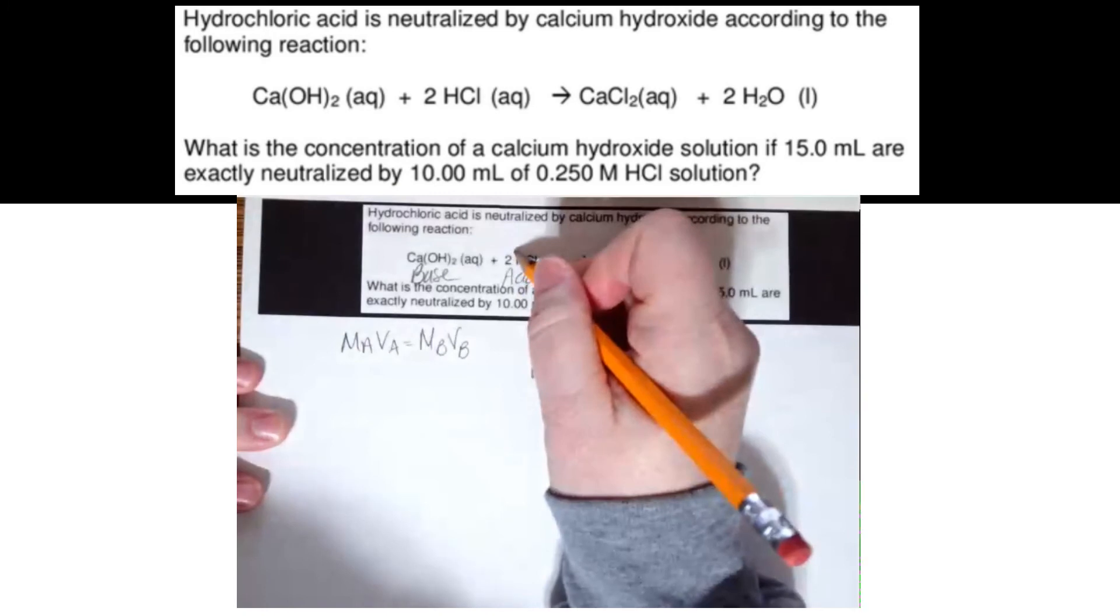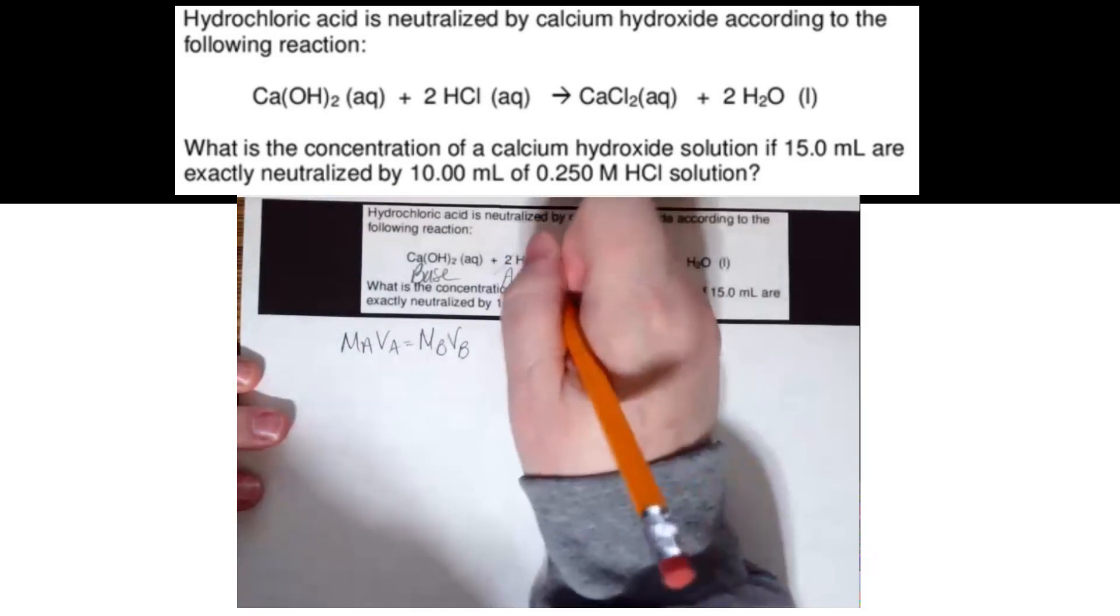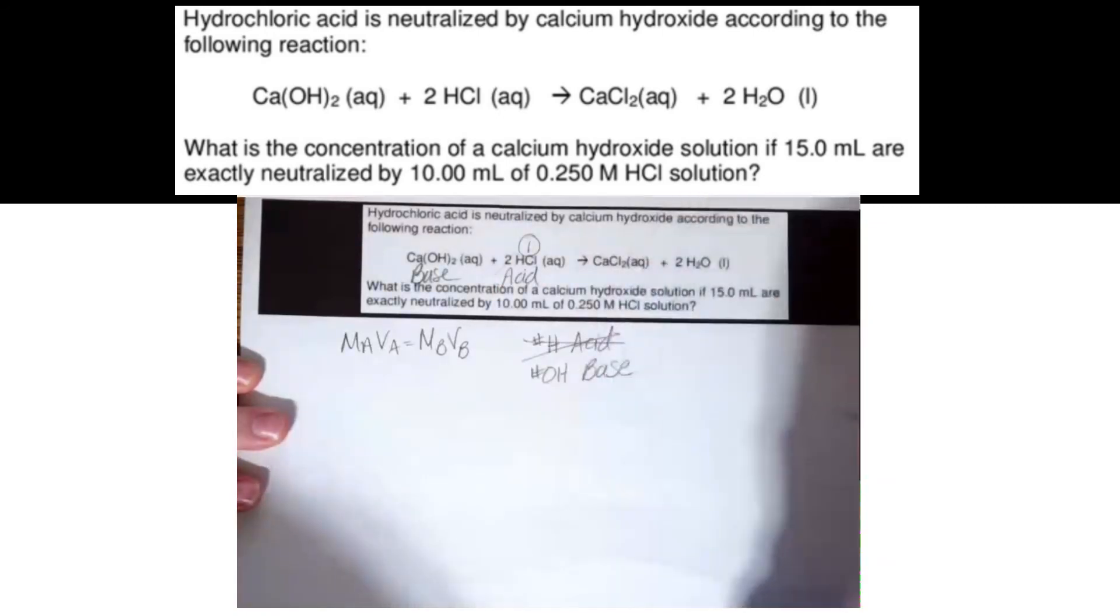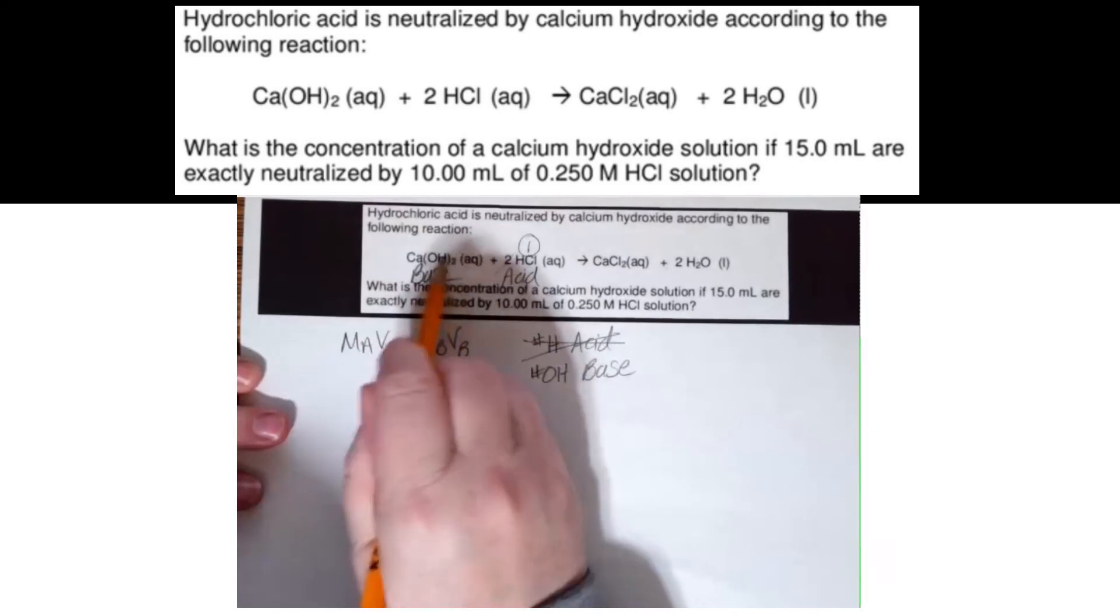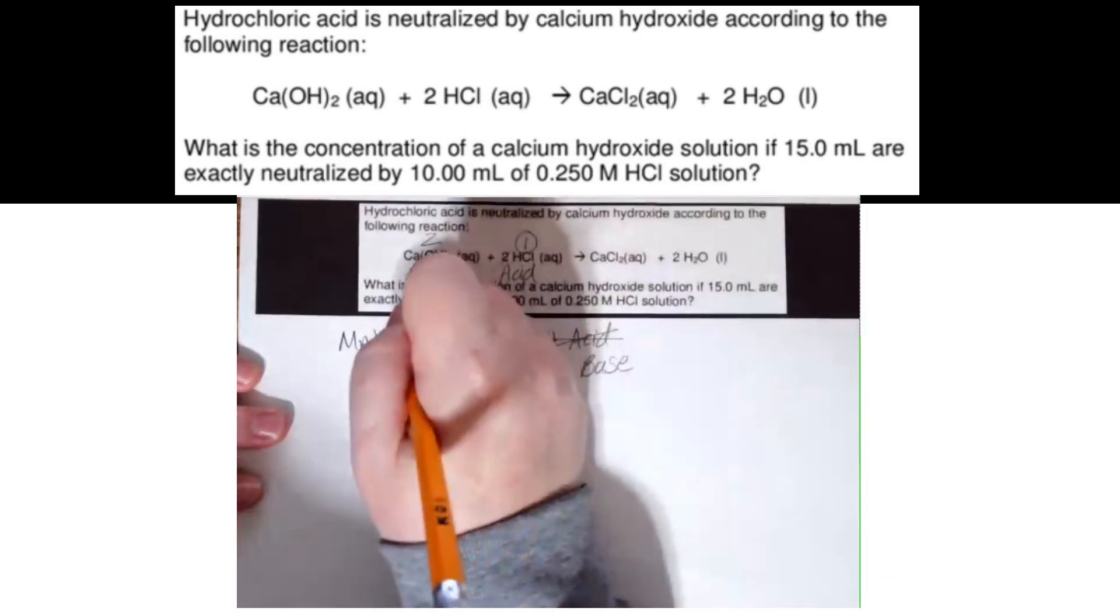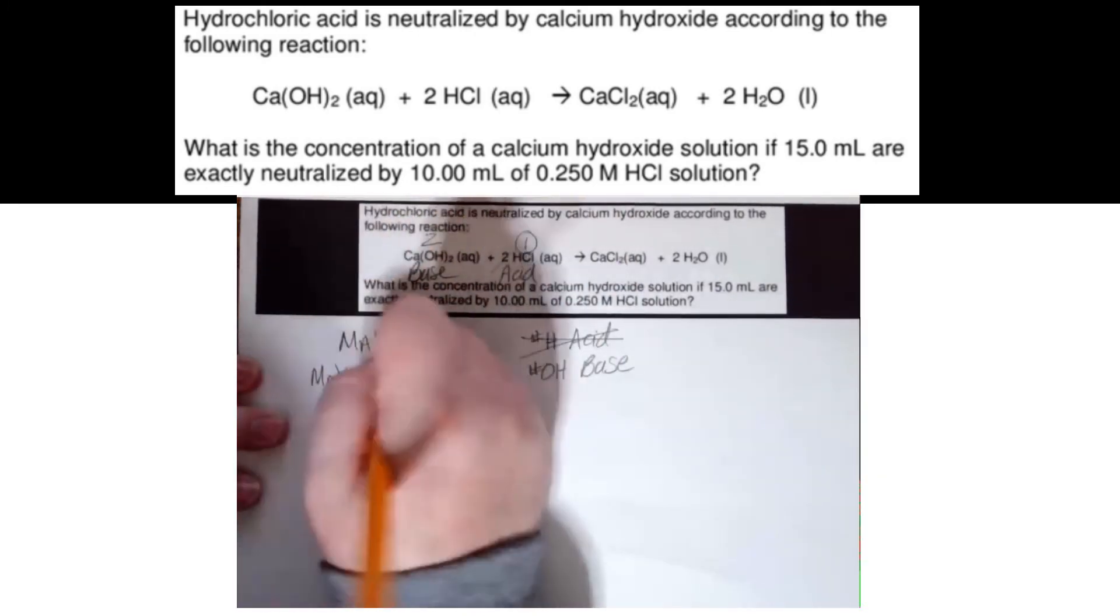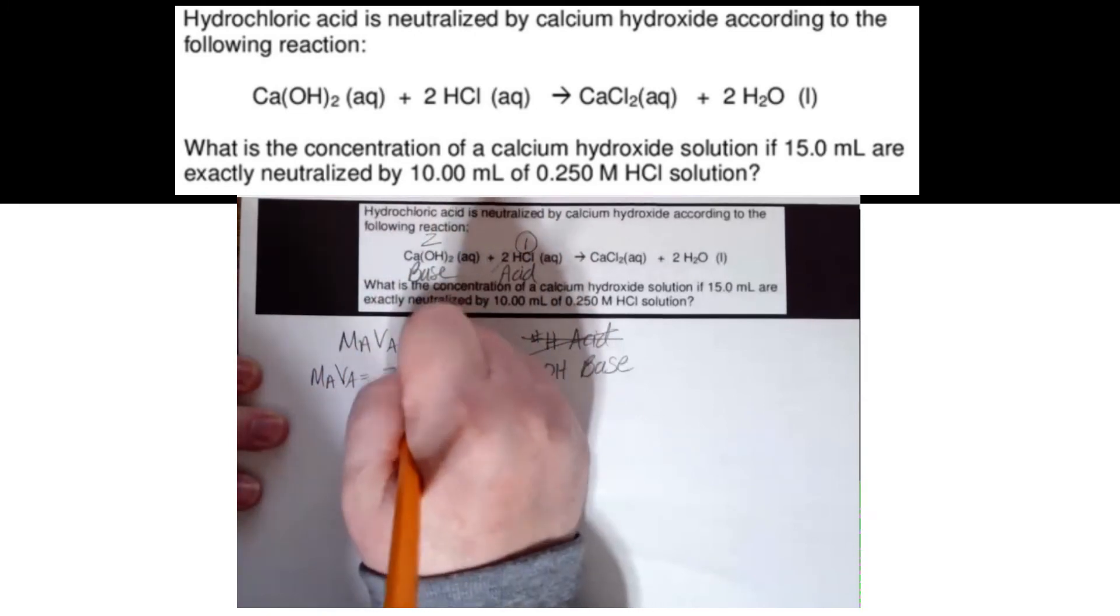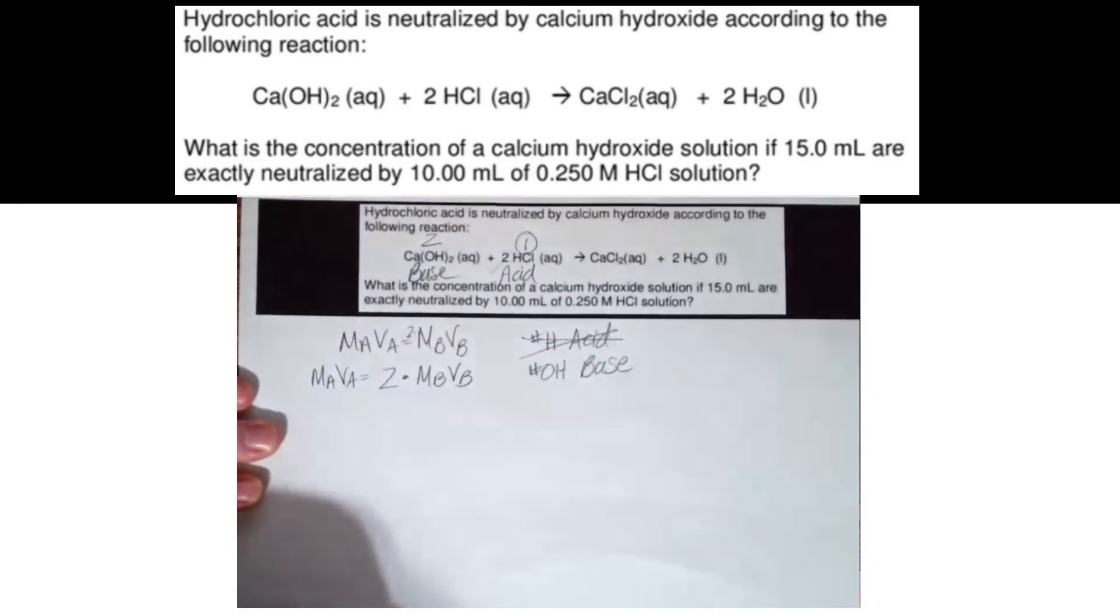This two is not in the formula. That's a coefficient. I ignore it. So look at this formula. How many H's? One. Don't have to worry about this then. But look at the formula for my base. How many OH's are in that formula? Two. So that means on the base side, I have to multiply it by two. So my formula is really MAVA equals two times MBVB. Because the number of OH's is doubled.